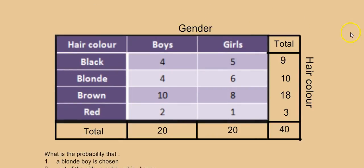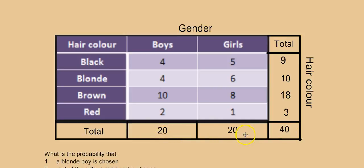The first thing to do with a two-way table is complete the totals of the rows and columns if they aren't already filled in. Adding an extra column and row, I've found there were 20 boys and 20 girls surveyed, and nine people with black hair, 10 blondes, 18 brown-haired people, and three redheads. Adding all numbers gives 40 — both vertically and horizontally. You should not add the row and column totals together to get 80; the 40 is the sum of all individual cells.